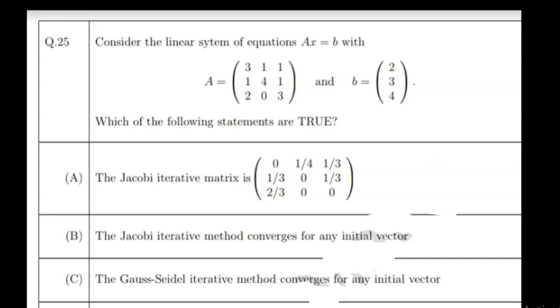The question is from numerical analysis. It says consider the linear system of equations Ax = b, with A equals to a 3x3 matrix given as [3,1,1; 1,4,1; 2,0,3] and b equals to [2; 3; 4]. Which of the following statements are true?